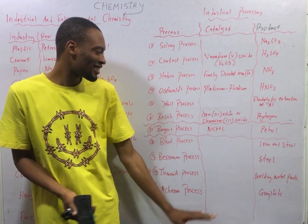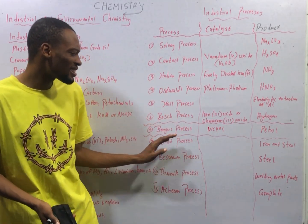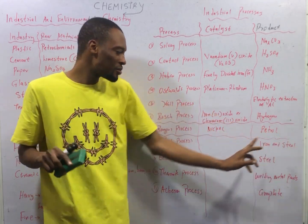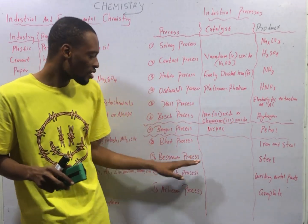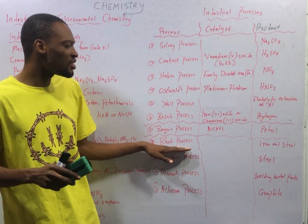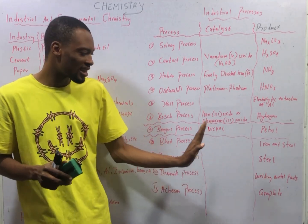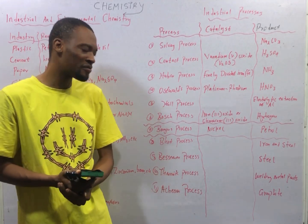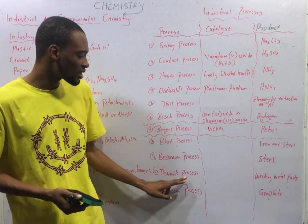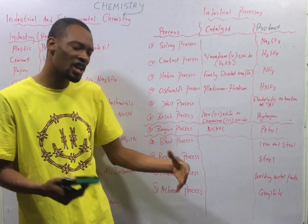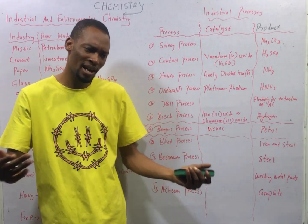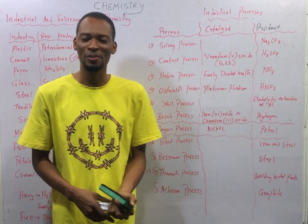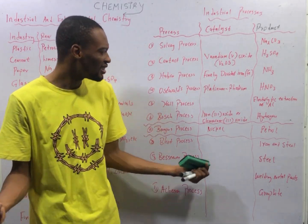The Bosch process is the industrial process used to make hydrogen from water gas. The Fischer-Tropsch process is used to make petrol, with nickel as the catalyst. The Blast furnace process is used to make iron and steel. The Bessemer process is the industrial process used to manufacture steel. The Thermite process is the industrial process used to weld metal parts together. And the Acheson process is used to manufacture graphite.